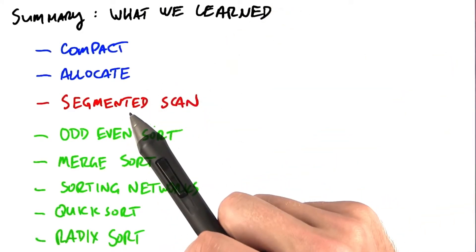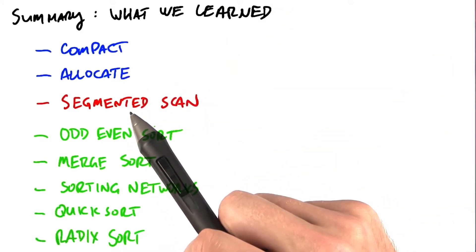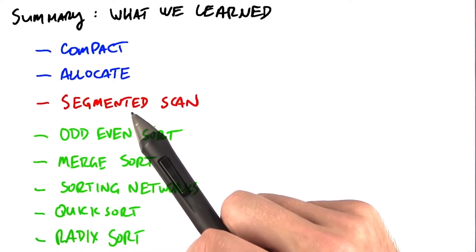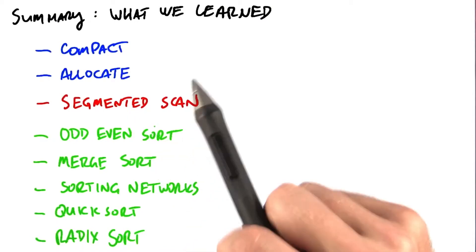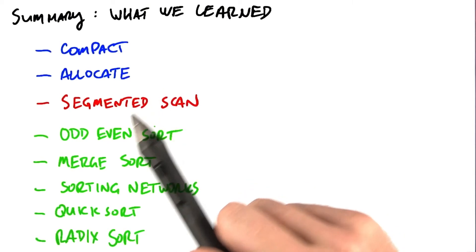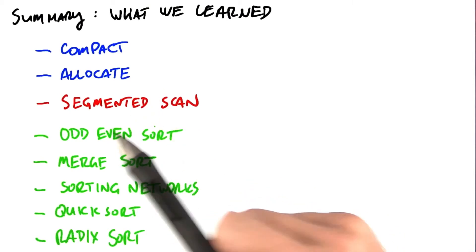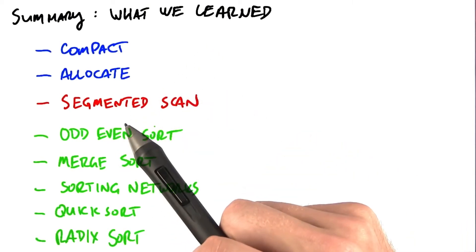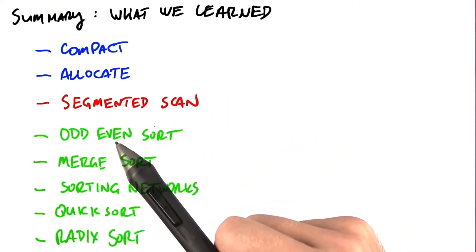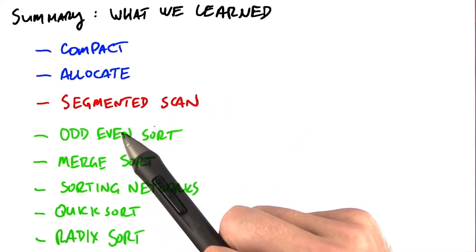You'll be using these techniques in the assignment this week, where you'll do automatic red-eye removal using template matching. This algorithm relies on sorting a vector by key, which indirectly relies on scan. So go apply your newfound knowledge to the assignment.